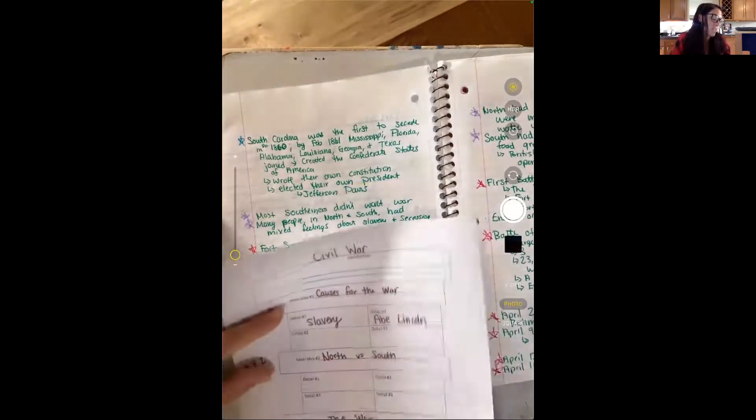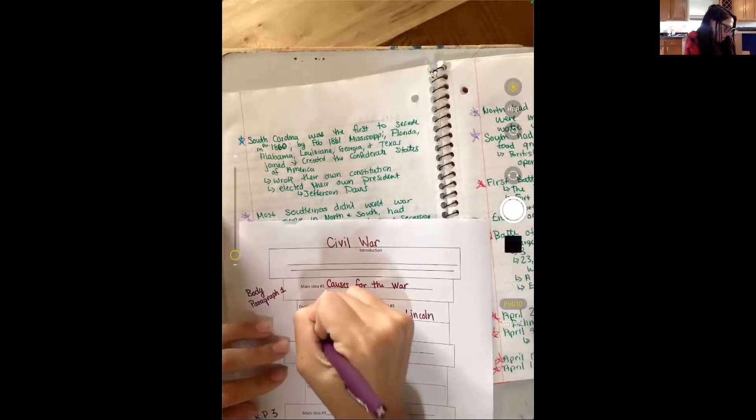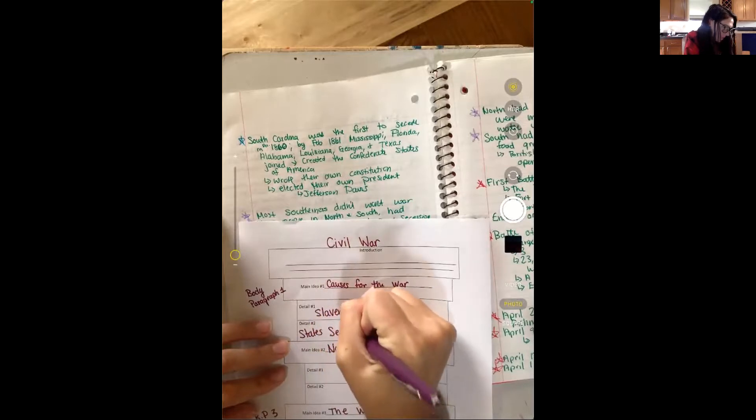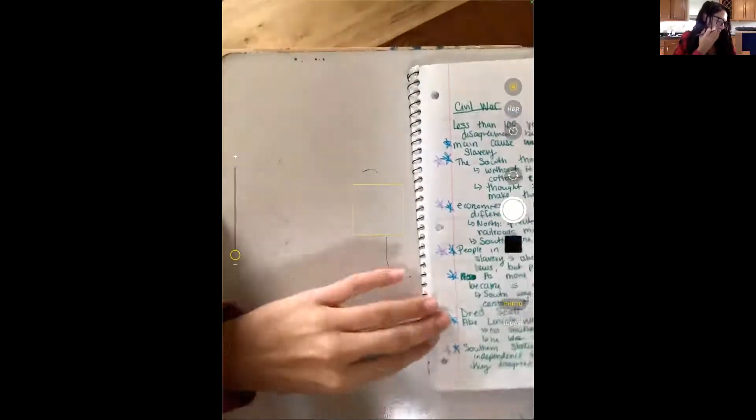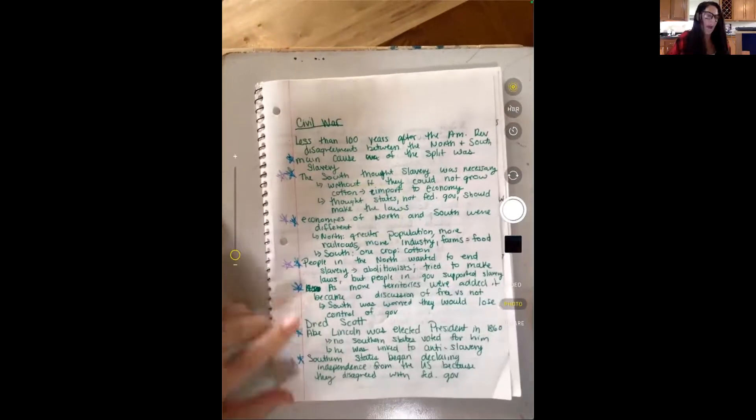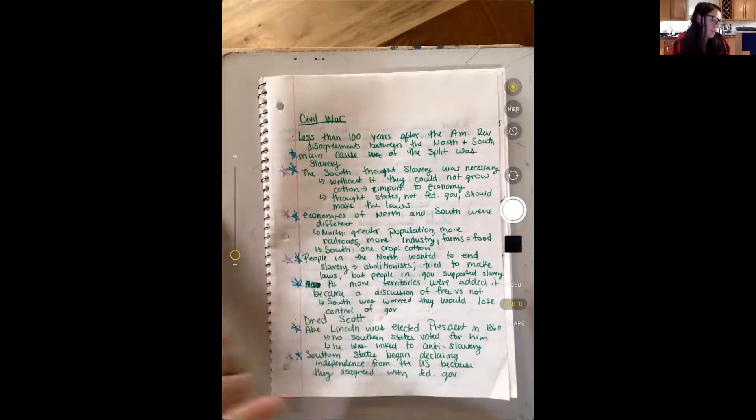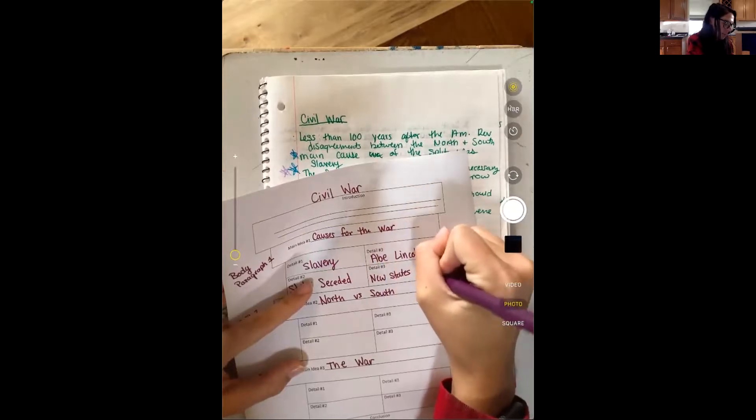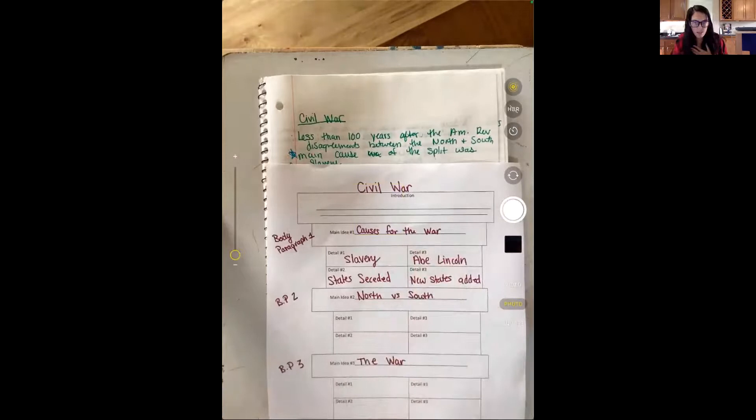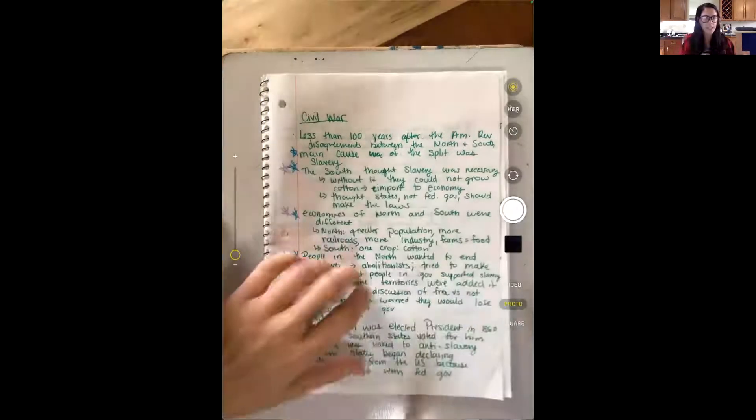Remember I want four details. I'm going to look. So States started to secede, which means they started to leave the United States. That's the Southern States. So States seceded. And I need one more detail. This one, new States were added and they didn't know if they were going to be a free state or not free state, which had to do with slavery. New States added. And now these notes make sense to me because I know what my notes say. So you might not fully understand what these notes mean, but I know what they mean because I took the notes.